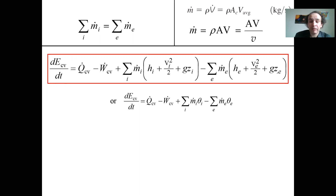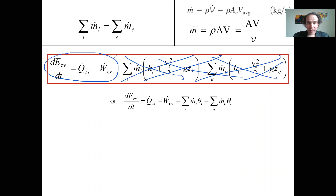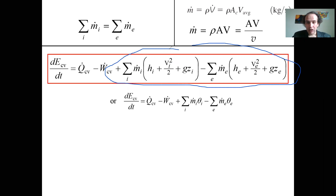If there is no mass flow rate, then m-dot is zero and those terms vanish, leaving nothing but the first law for a closed system. So this big equation is not a different equation — it is the general form of the first law of thermodynamics describing both closed and open systems.